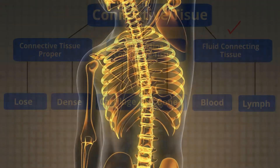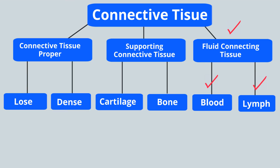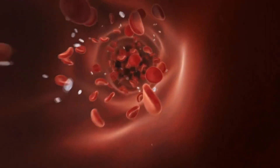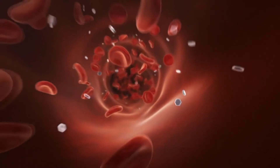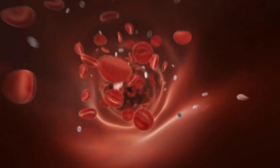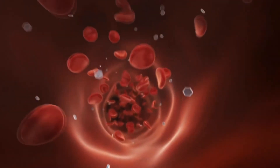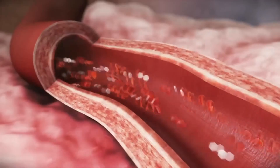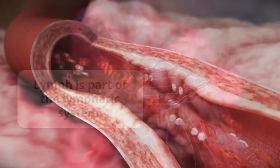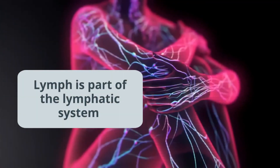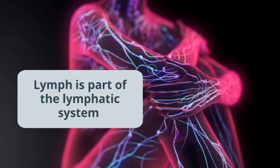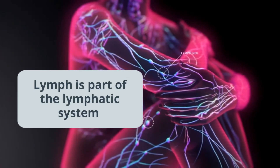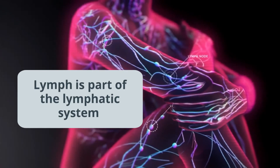And finally, fluid connective tissue. First is blood — it has many functions, including transporting oxygen, carbon dioxide, and nutrients around the body, and it also contains white blood cells. Lymph is a clear fluid that contains white blood cells, created when blood leaks out of arteries, veins, and capillaries.